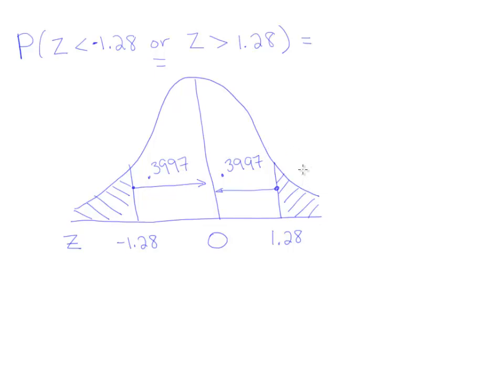Now, if I want to get this tail area, I have to do the 50% of the whole half of the curve minus this value of 0.3997. Do a little old-school borrowing here, just to be able to do the subtraction. 10 minus 7 gives me 3. 9 minus 9 is 0. 9 minus 9 is 0. And then, 4 take away 3 is just 1. Carry your decimal point, and you get 0.1003, or 10.03%.